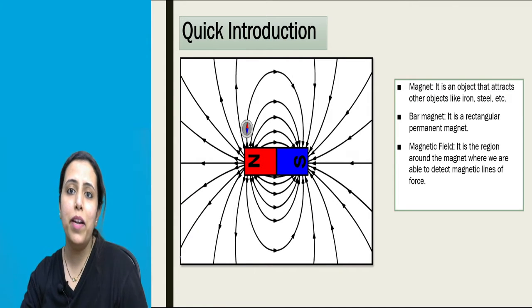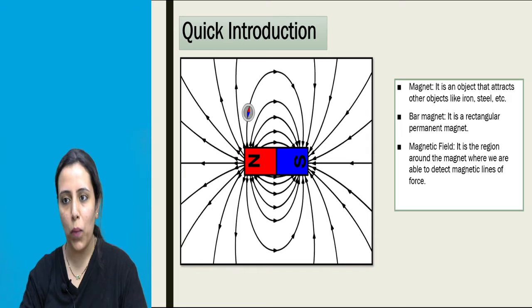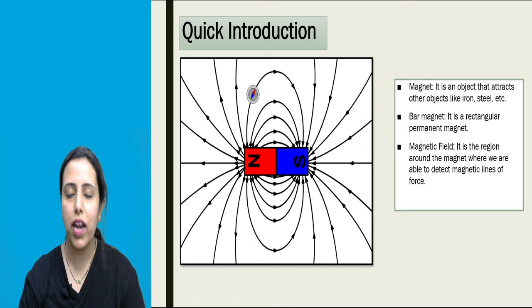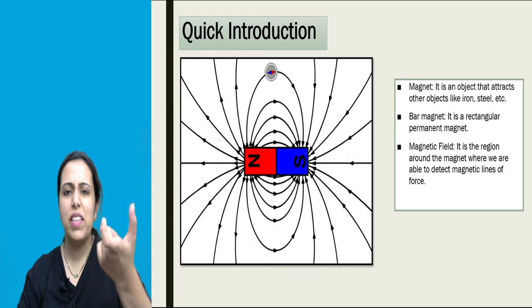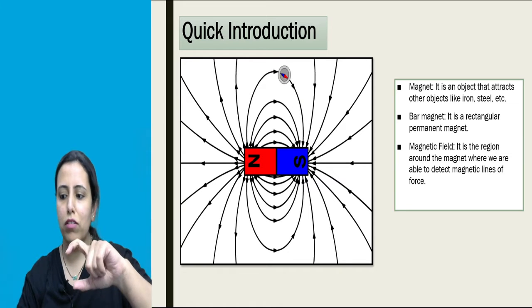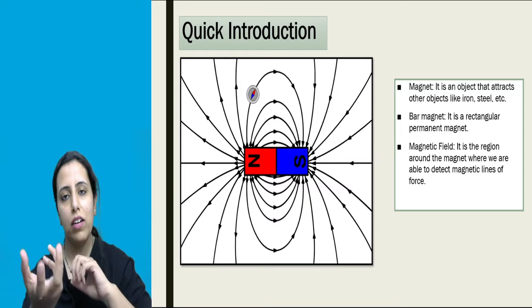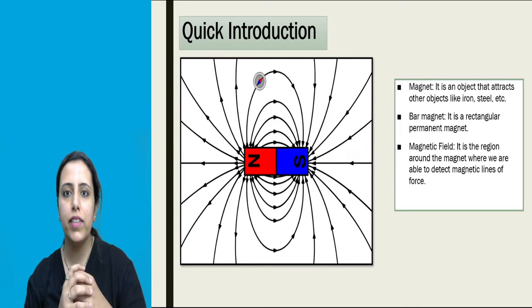What is magnet basically? Magnet is an object that attracts other objects like iron and steel. It is basically a magnet which attracts iron or steel towards it.